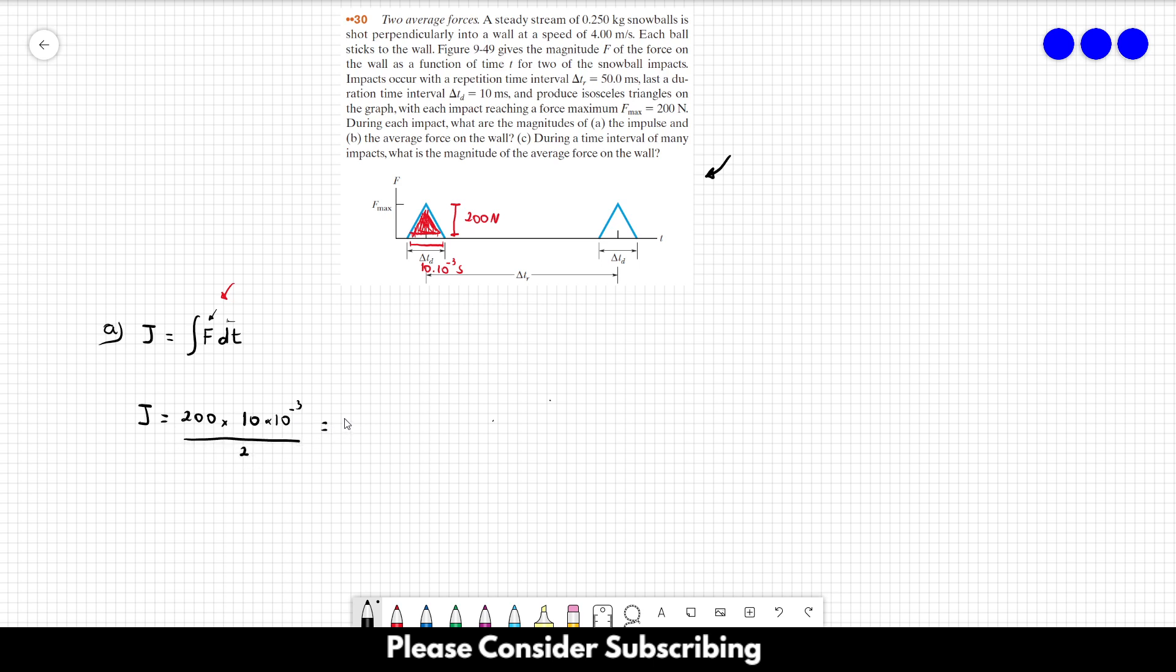Okay, so this gives us just one newton second. So that's the answer of letter A. The impulse for one snowball is one newton second.